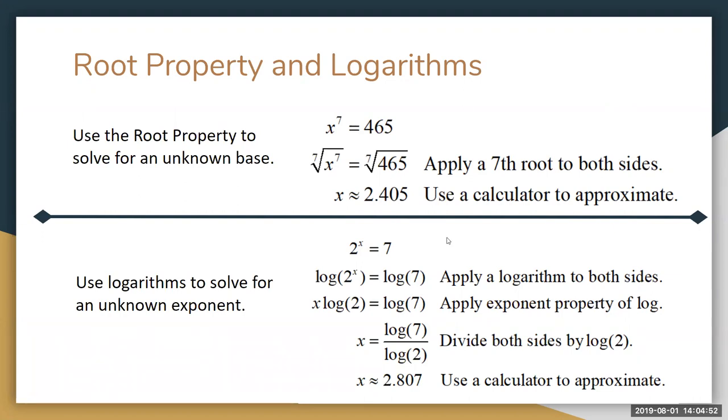Consider this equation 2 to the x equals 7. The question is what power do you raise 2 to in order to get 7? We know that 2 to the second power is 4 and 2 to the third power is 8 so the power must be some number between 2 and 3.